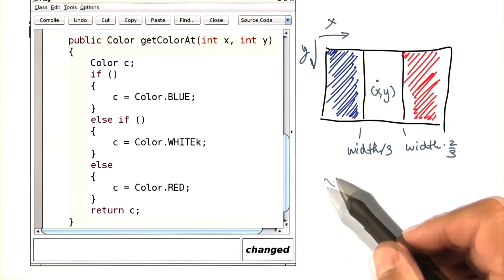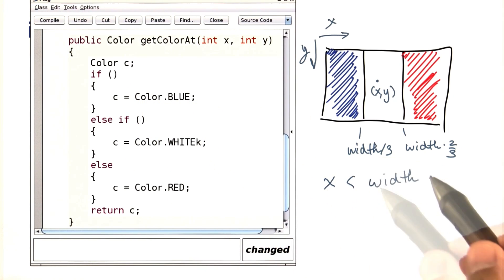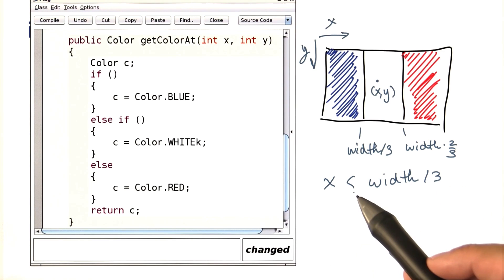So, the first condition here is going to be x less than width over 3, or maybe less than equal width over 3. Let's settle that.